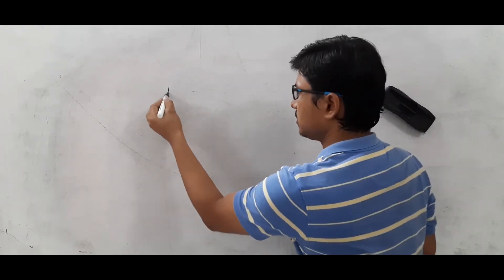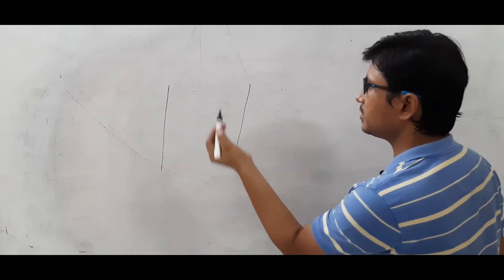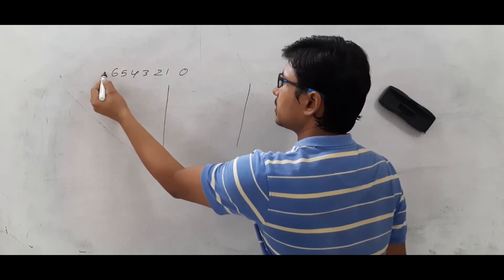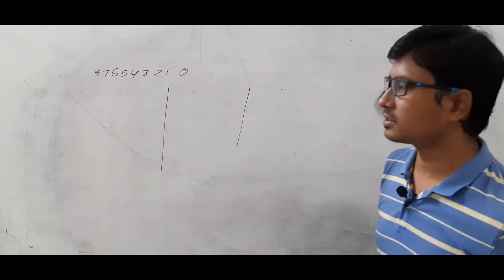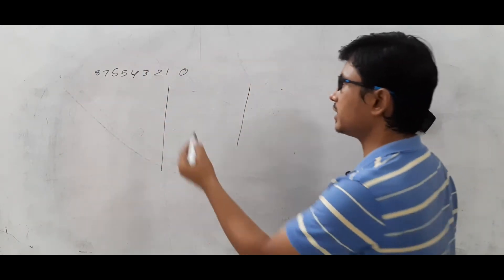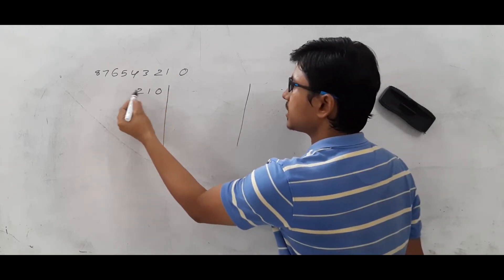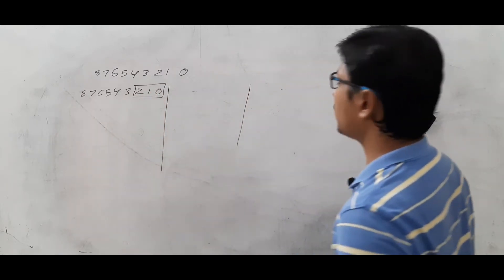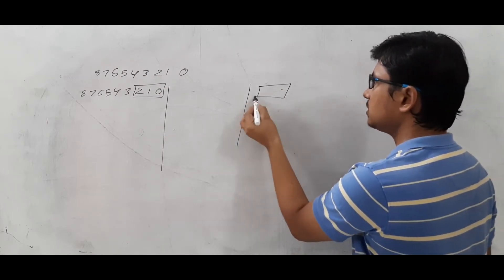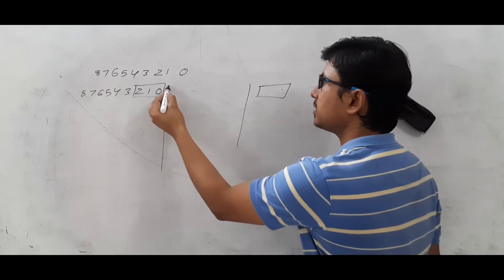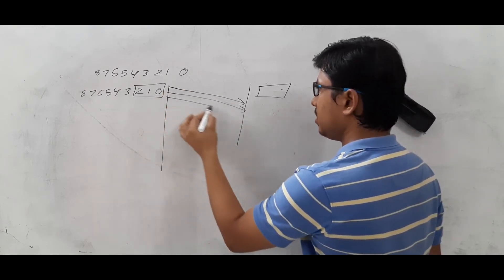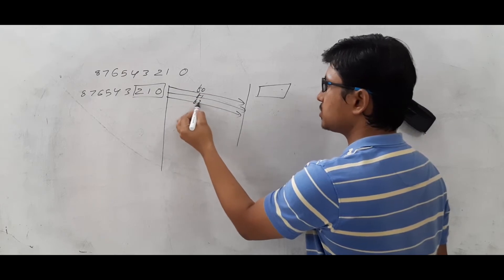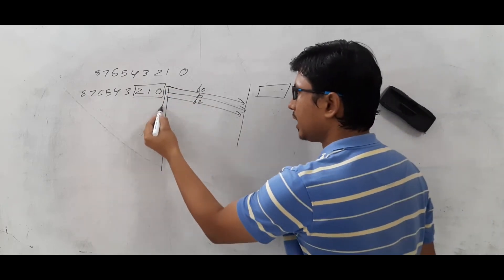Let's take an example where the sender wants to send nine packets — frames numbered 0 to 8. The sender window size is 3 and the receiver window size is also 3. The sender will send all frames in the window one by one: frame number 0, frame number 1, and frame number 2, and it will wait for a timeout timer for each acknowledgement.